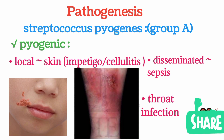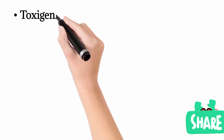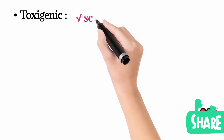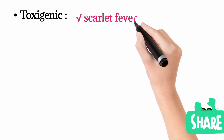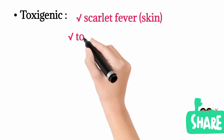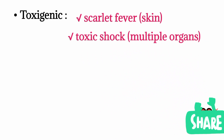The second mechanism of pathogenesis of Streptococcus pyogenes is toxigenic — the ability to produce exotoxins, which are harmful chemicals that can also cause disease. One disease is scarlet fever, which is typically confined to the skin. The second is toxic shock, a shock-like condition involving multiple organs.